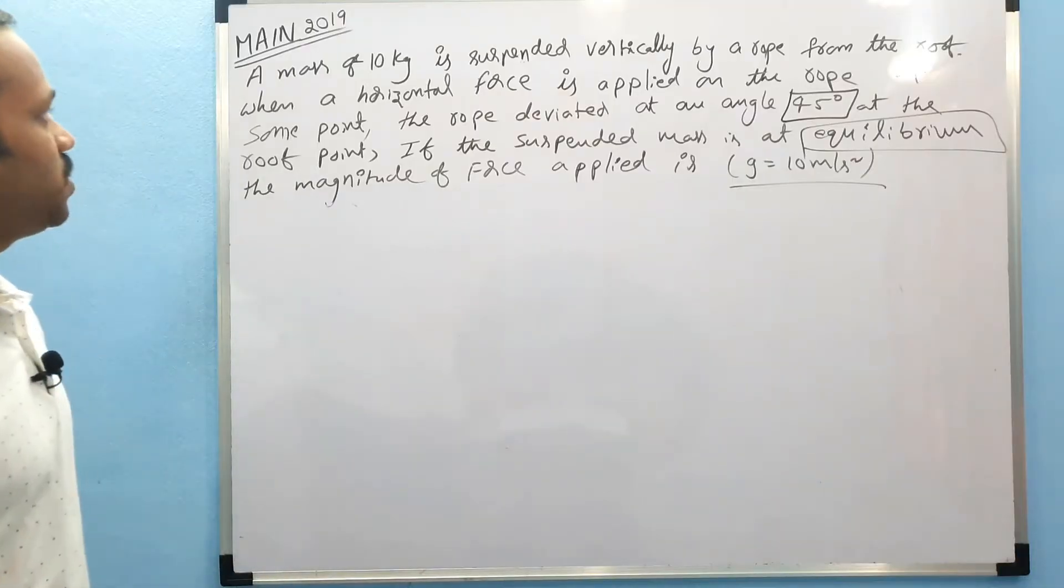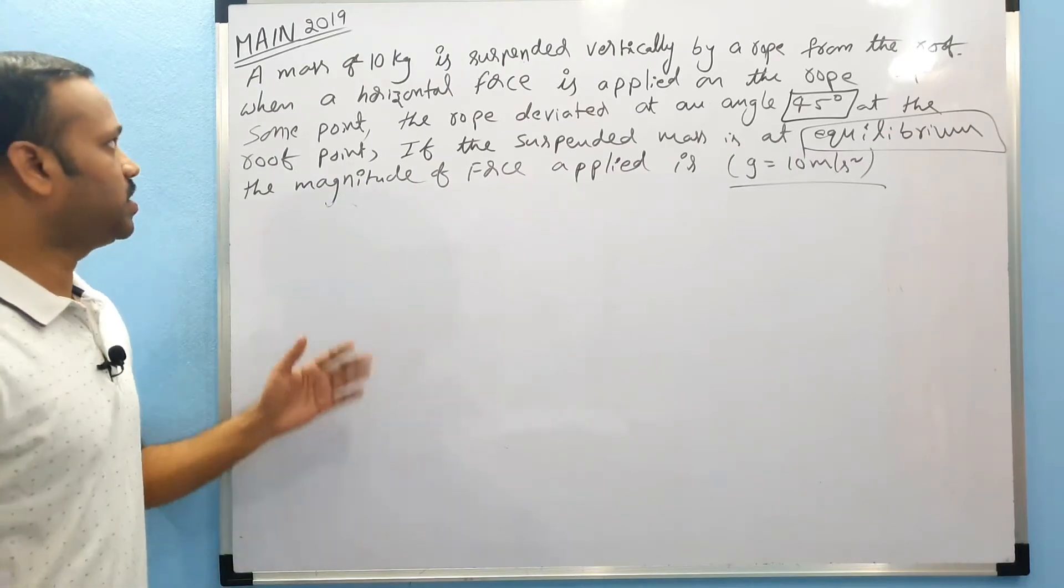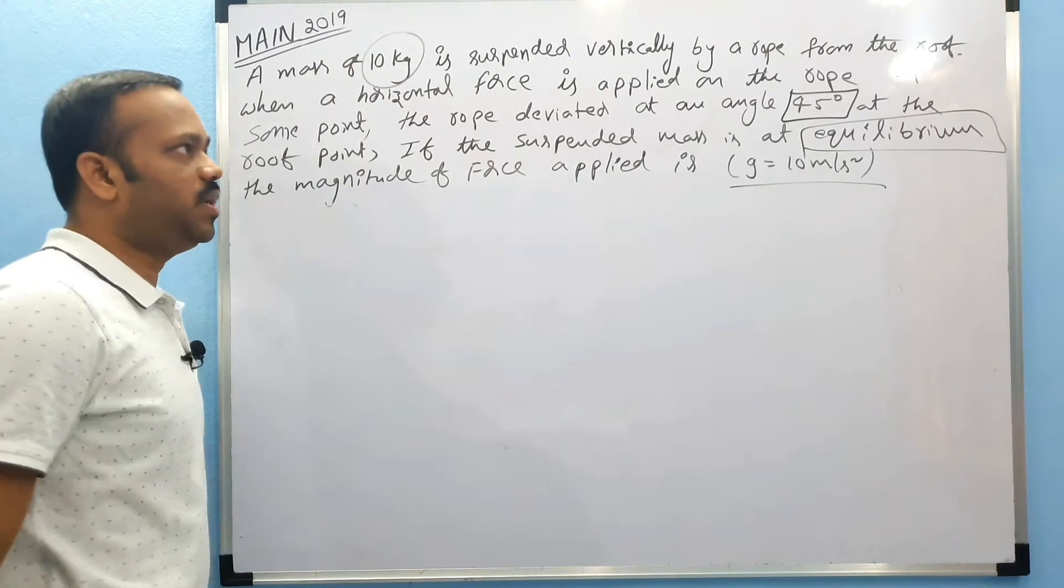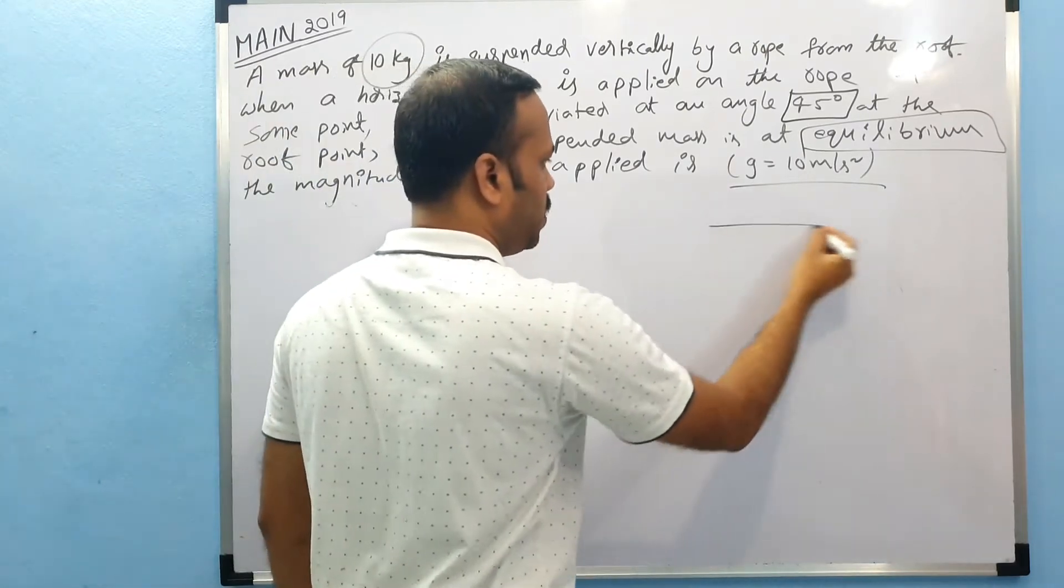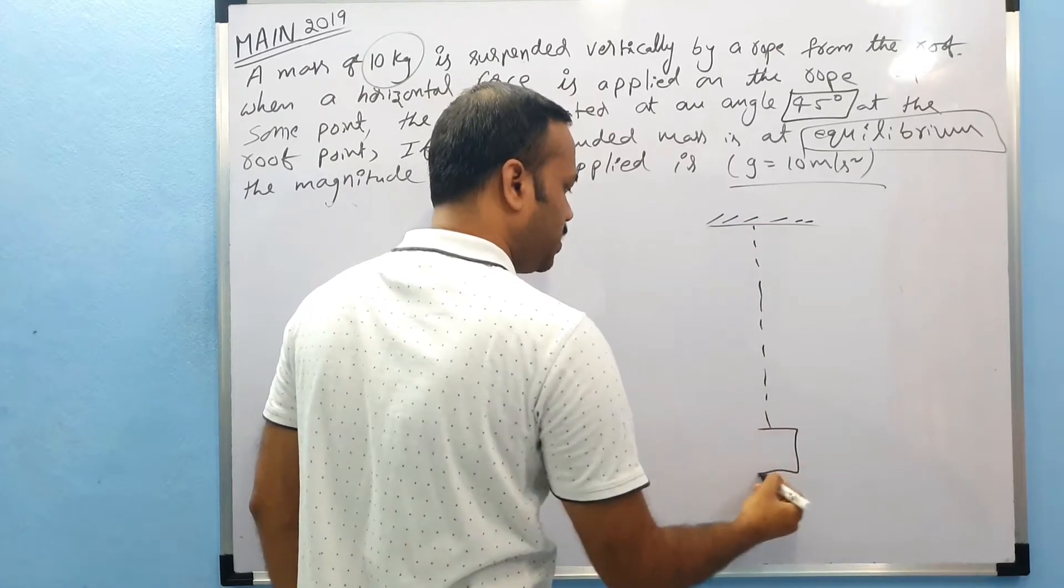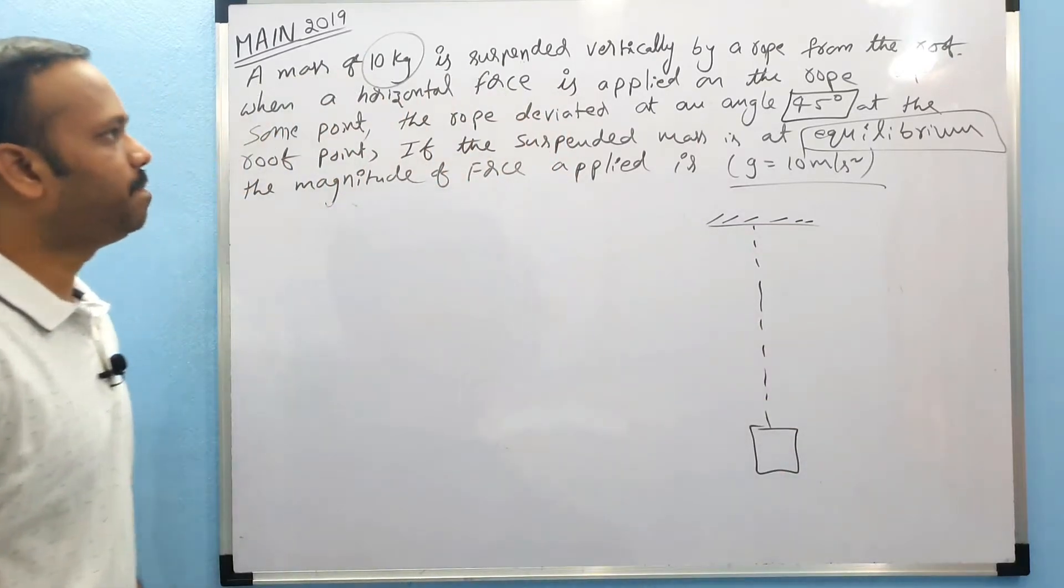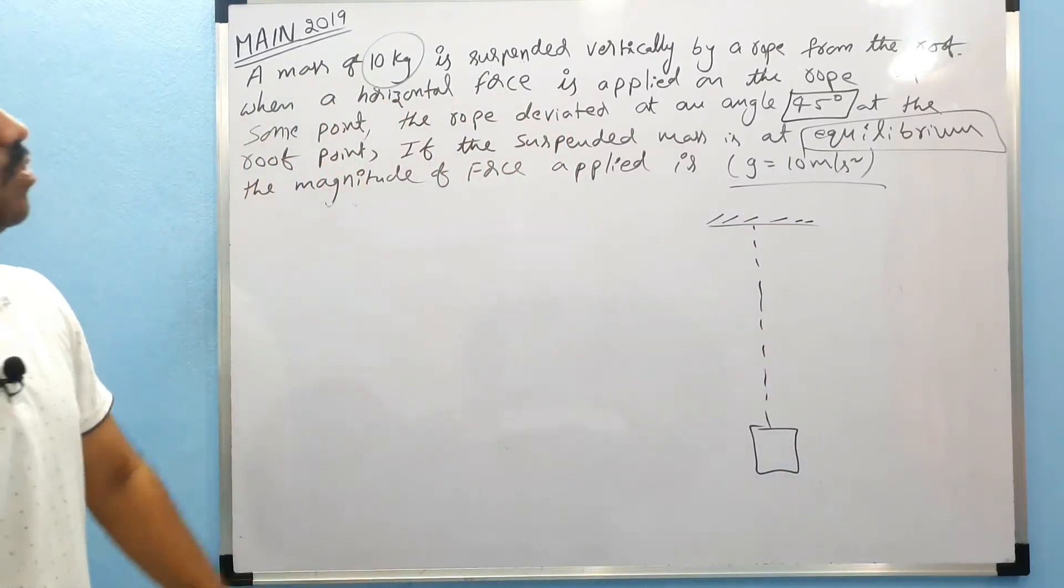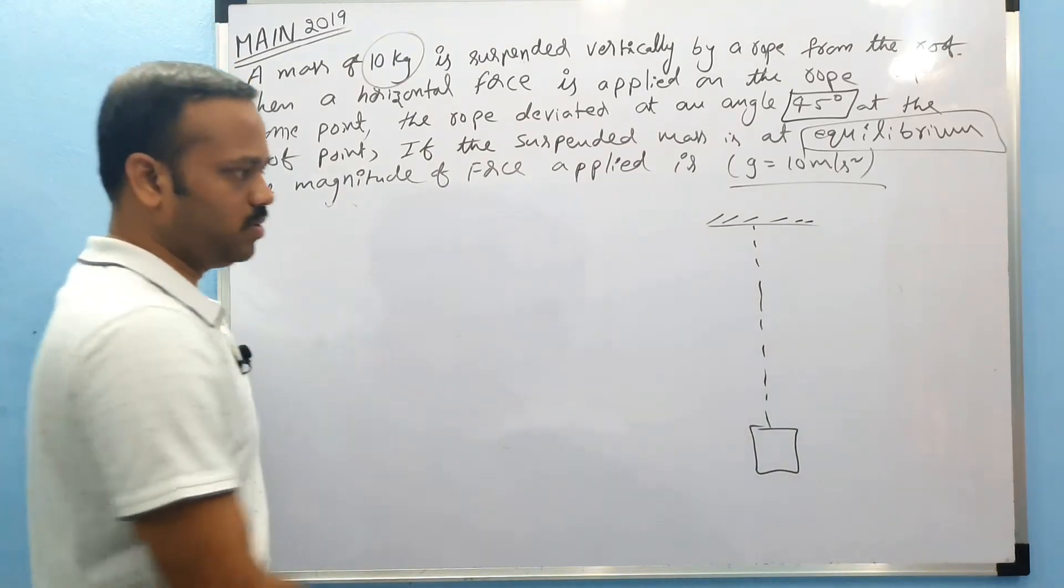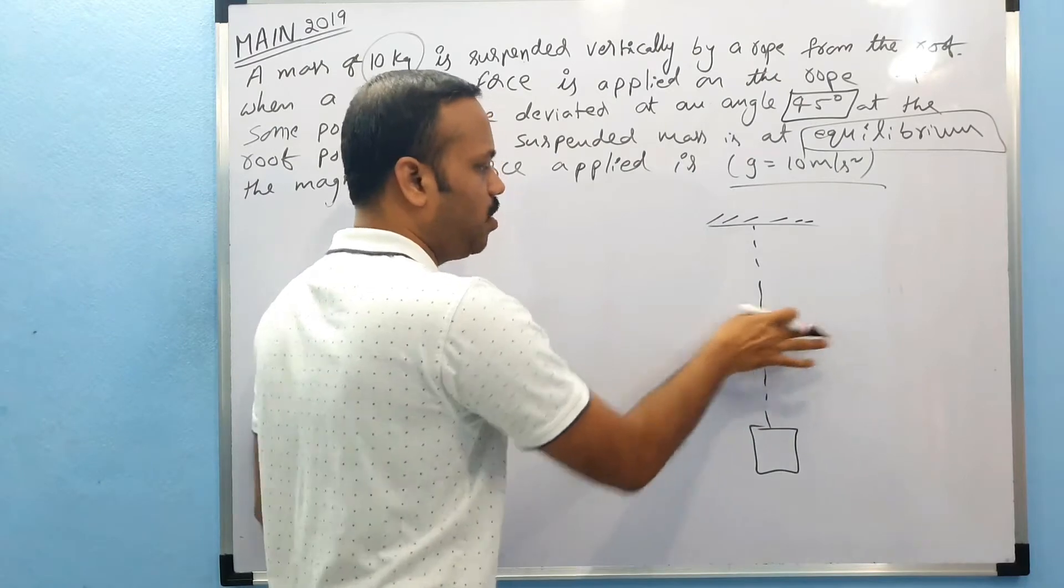This is the question given in MAINS 2019. A mass 10 kg is suspended vertically by a rope. When a horizontal force F is applied on the rope at some point, the rope is deviated by an angle.